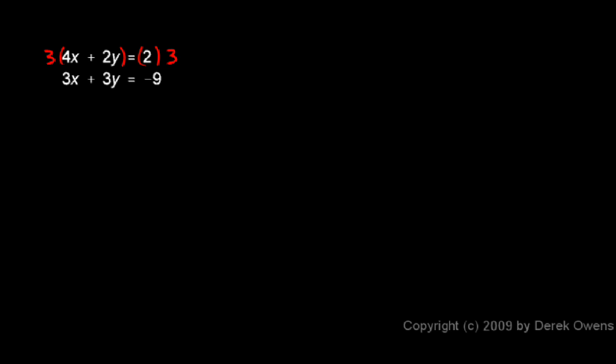And that gives me this. I'll write it down here. Distributing the 3 gives me 12x plus 6y, and on the right I have 6. So my first equation is equivalent to this. I've just changed it a little bit. It's mathematically equivalent because I'm allowed to multiply both sides by the same thing. So I just have a new version of that first equation.